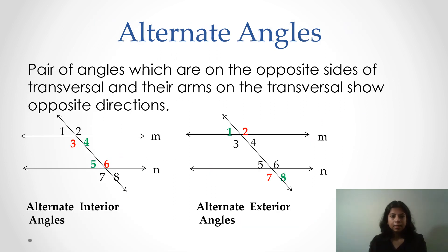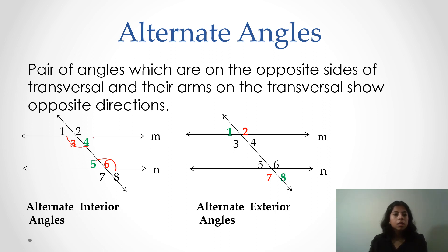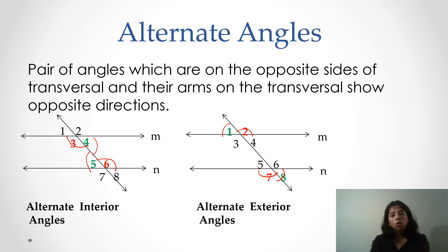Now let's see alternate angles. Alternate angles are on the opposite side of the transversal and in the opposite direction of the parallel lines. Alternate angles can be interior or exterior. Angles 3 and 6 are a pair of alternate interior angles, and angle 4 and angle 5 are another pair of alternate interior angles. Angles 1, 2, 7, and 8 are on the exterior side, so angle 1 equals angle 8 and angle 2 equals angle 7 — these are alternate exterior angles. By the property of alternate angles, each pair is congruent.